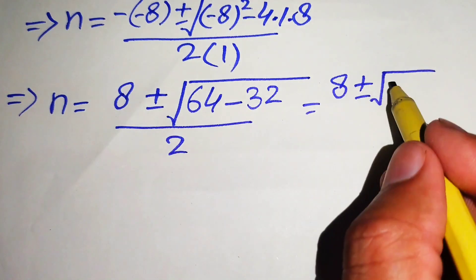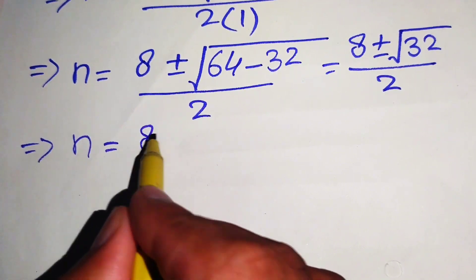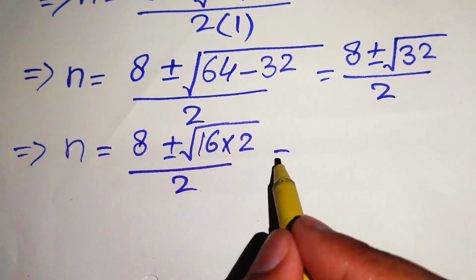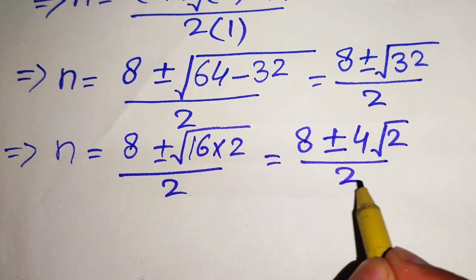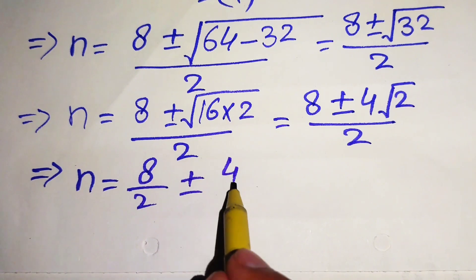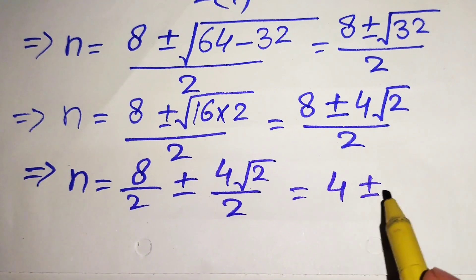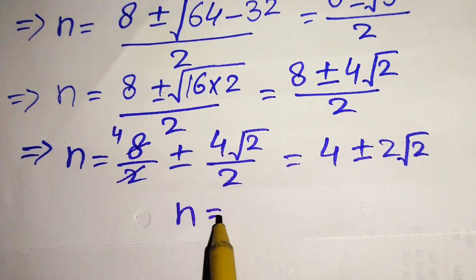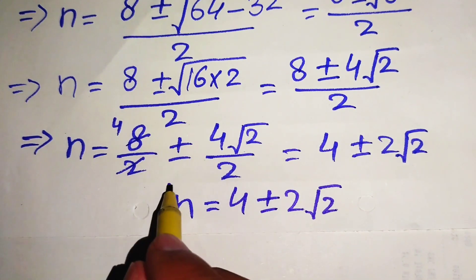We rewrite this as n equals 8 plus or minus square root of 64 minus 32, which is 32, divided by 2. We write 32 as 16 times 2, so the square root of 16 times 2 equals 4 root 2. Separating the fraction, we get n equals 8 over 2 plus or minus 4 root 2 over 2, which simplifies to n equals 4 plus or minus 2 root 2.